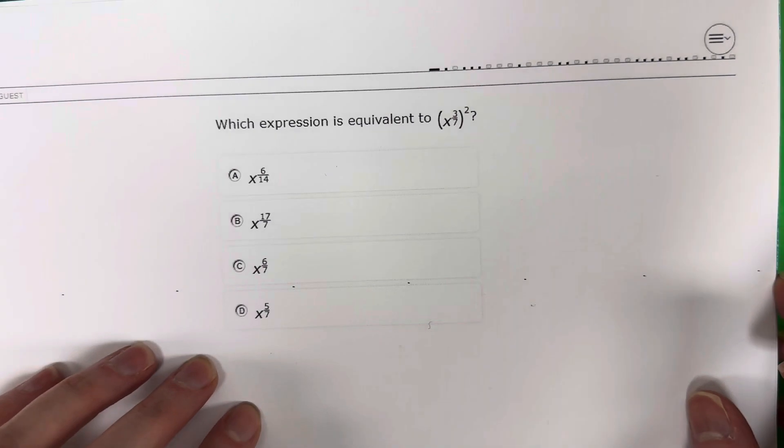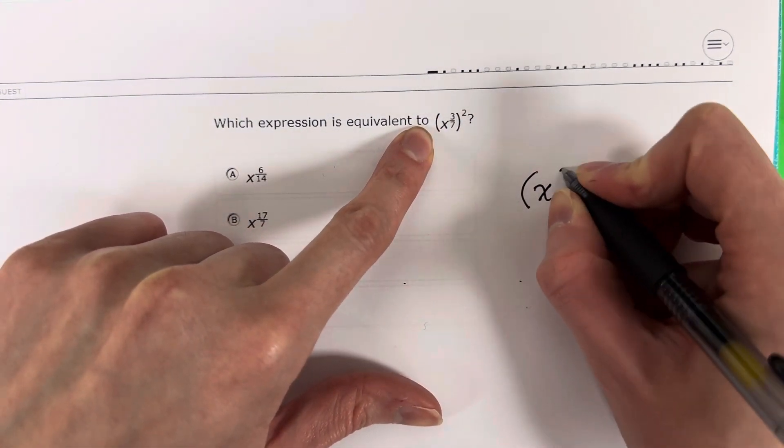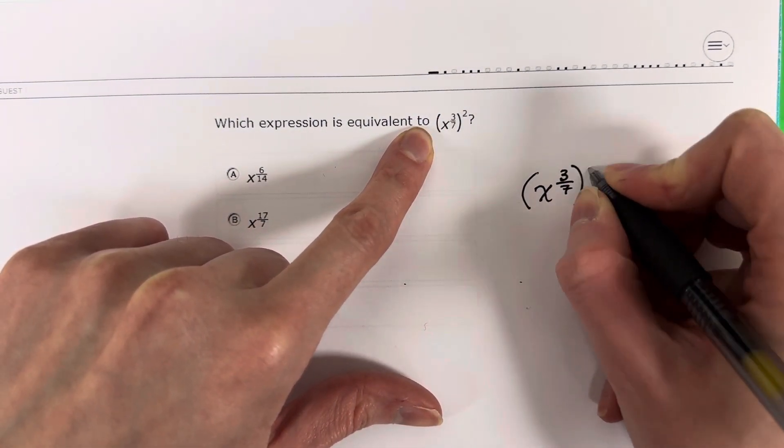Alright, so let's go ahead and talk about this. Let me write it. So x to the 3/7 power squared.